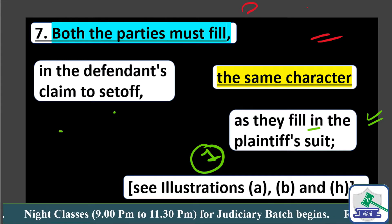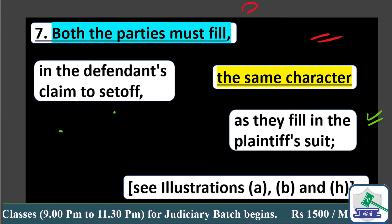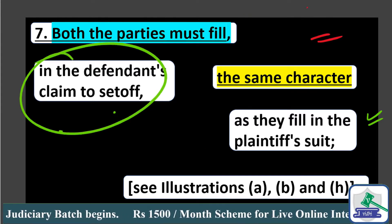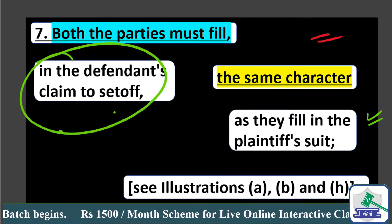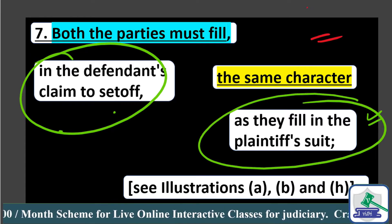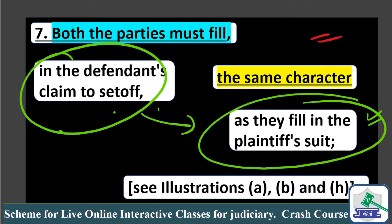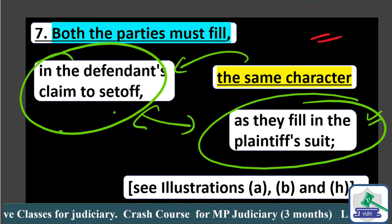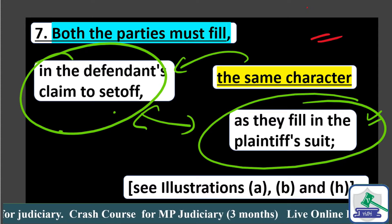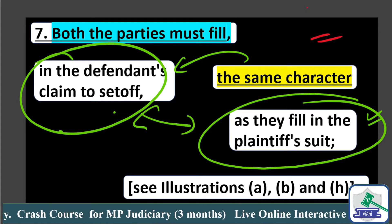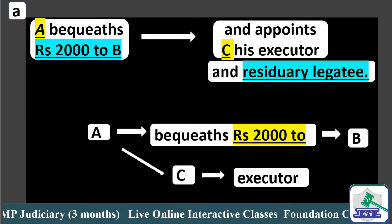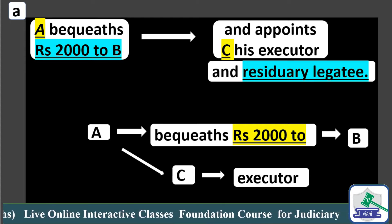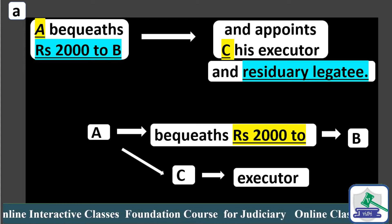Both parties must fulfill. One suit is the defendant's — he is making a set-off claim. The second suit is the plaintiff's. These are two different suits and in both cases they must have the same character. Now to understand it better, let's take up this illustration.